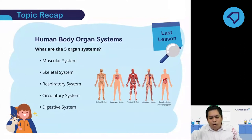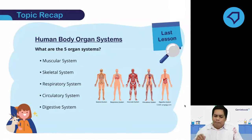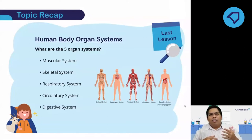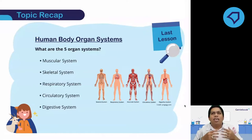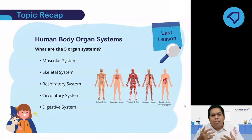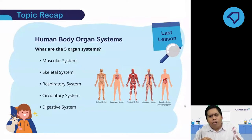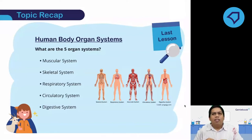And the next one, the circulatory system. The main function of the circulatory system is to carry your digested food and gases — oxygen — to other parts of the body, and to return carbon dioxide and waste materials back to be removed. So that's the main function of the circulatory system.